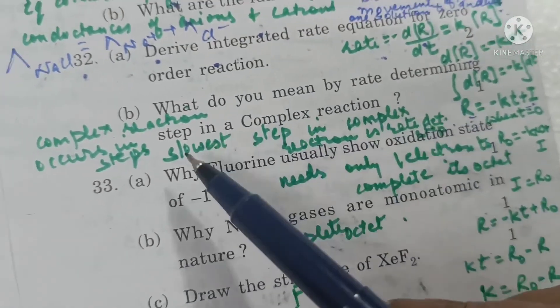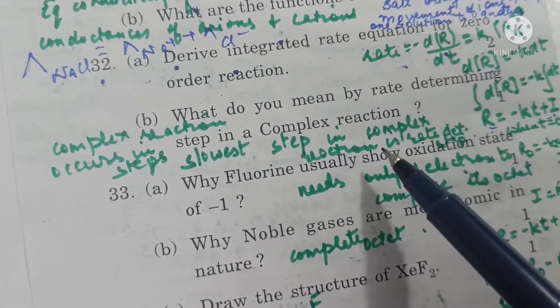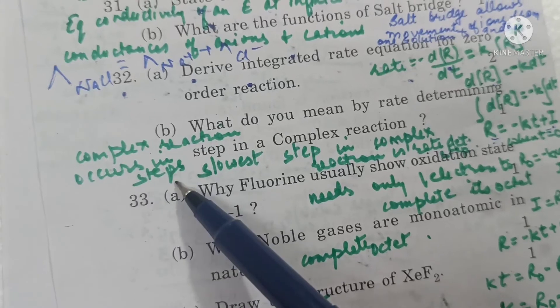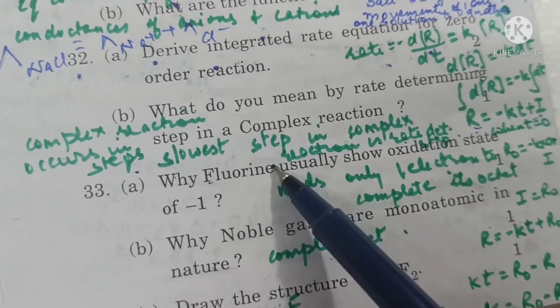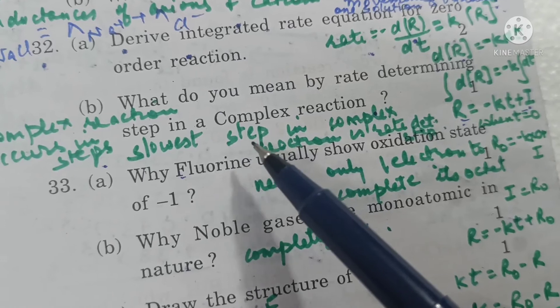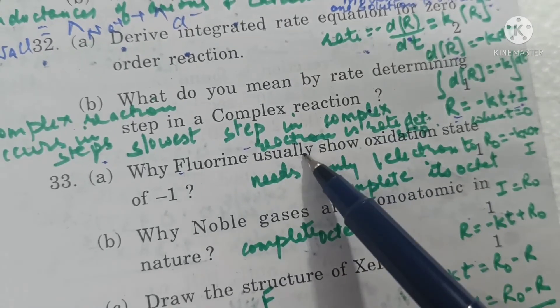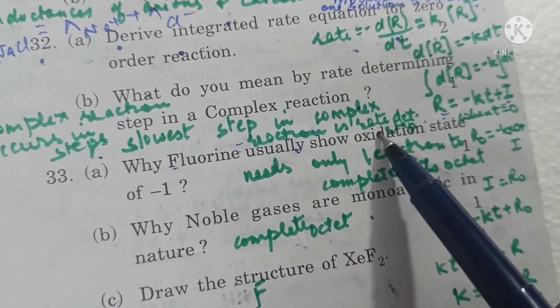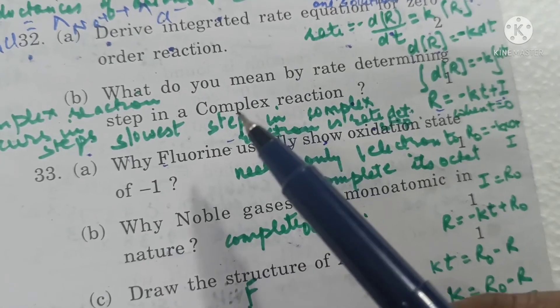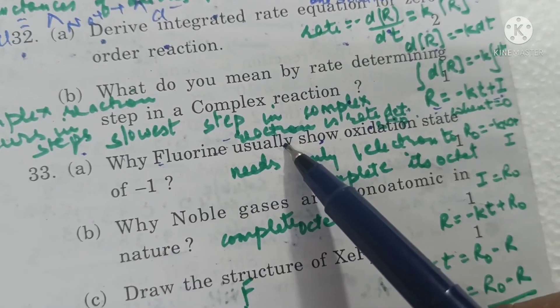What do you mean by rate determining step in a complex reaction? A complex reaction occurs in steps and the slowest step is the rate determining step. The slowest step in the complex reaction decides the rate of the reaction.